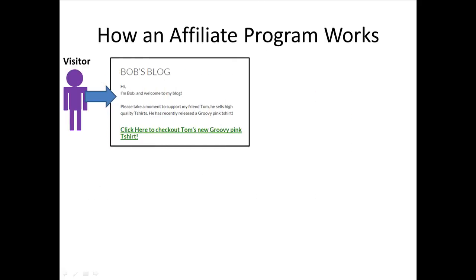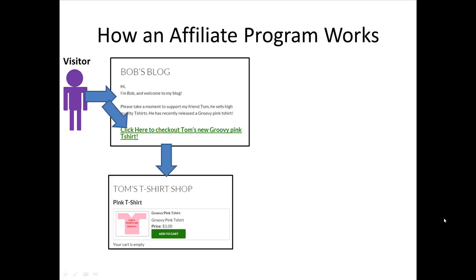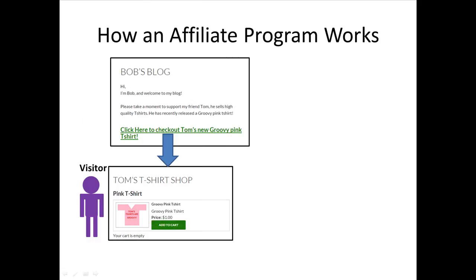Let's look at the process flow of how this affiliate program works. A visitor comes to Bob's blog and sees a link that says "click here to check out Tom's new Groovy Pink t-shirt." The visitor clicks on this link and is directed to Tom's t-shirt shop — the e-store, the merchant. So now the visitor is at Tom's t-shirt shop after being directed there from the affiliate via the affiliate link.